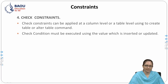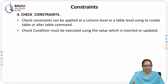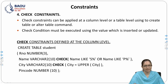The next important constraint is the check constraint. It creates objects using the check constraint. Business rules determined by the business manager are applied to data when it is being inserted or updated into table columns. The check constraint can be applied at the column level or table level using CREATE TABLE or ALTER TABLE commands. The check constraint must be evaluated using the value being inserted or updated.